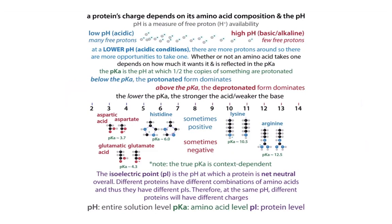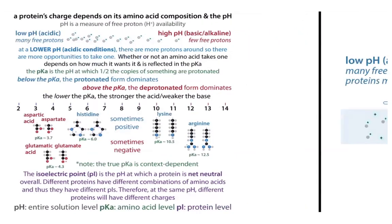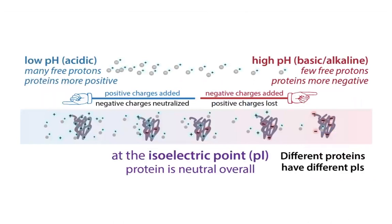The pKa tells us about protonation and deprotonation, not about charge. The isoelectric point tells us about charge — it's the point at which the protein is net neutral overall. If we want to use a protein in its positively charged form and take advantage of its cationic nature, we need the pH to be below the pI, that is below the isoelectric point. So if we have a basic protein we want to use cation exchange chromatography, we need to be below the pI.